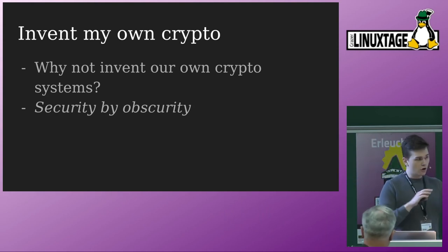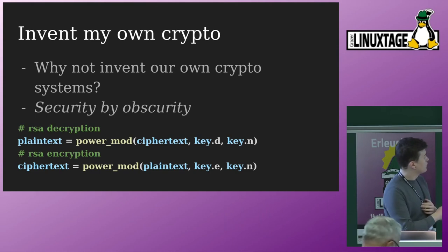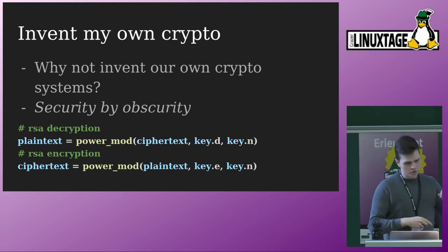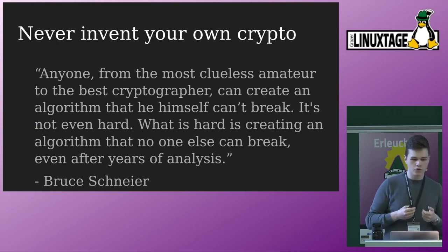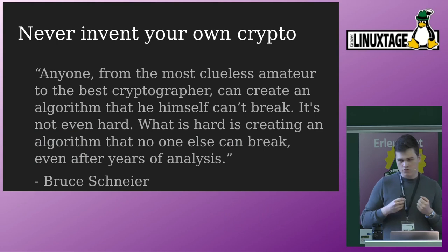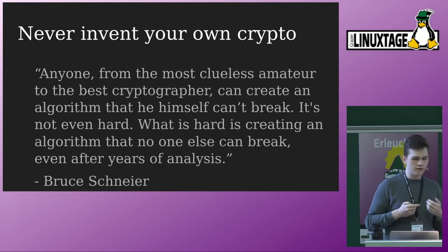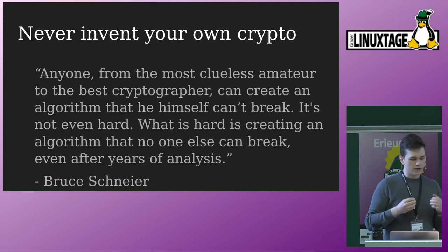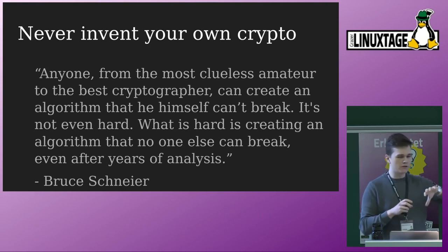The idea is that as long as nobody else knows what my algorithm is doing, it might be secure. RSA encryption is basically a line of code — you have to derive the key, but in essence it seems fairly easy. This is a really terrible idea and something we should all try to avoid. There are people who have spent years of their lives — professors creating cryptographic algorithms that are trying to be as secure as possible — and there is a huge community ensuring that the algorithms we use are really secure.